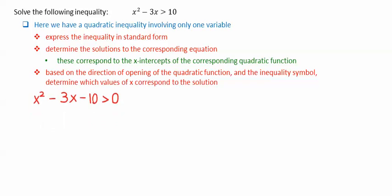Here, first changing it into standard form by subtracting 10 from both sides, we get x-squared minus 3x minus 10 is greater than zero.